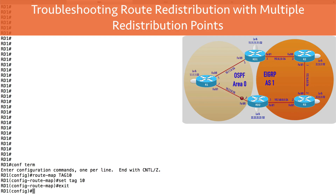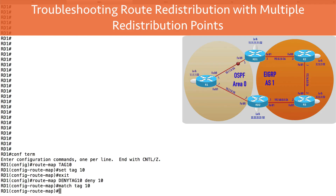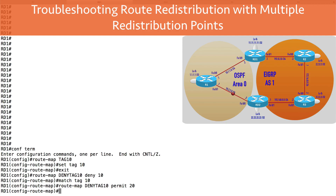Let's create a second route map. I'll say route-map deny-tag10, this time with deny and a sequence number. I'm wanting to deny routes that have a tag of 10, so I'll say match tag 10 — and we're going to deny those from being redistributed from OSPF back into EIGRP, thus breaking that potential routing loop. However, I want to allow other traffic to be redistributed, so I need a second statement in this route map with a higher sequence number set to permit, matching everything else by default.